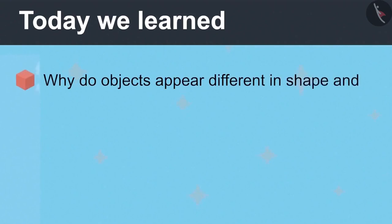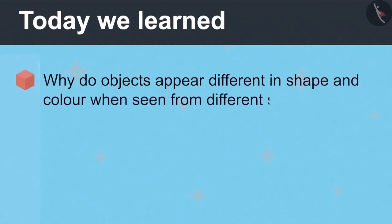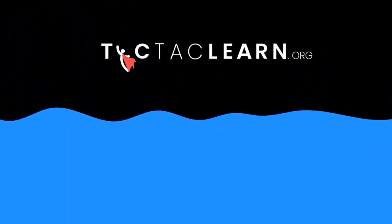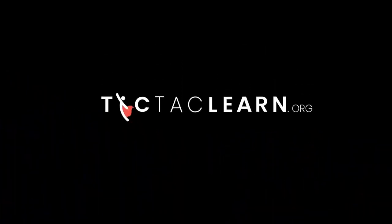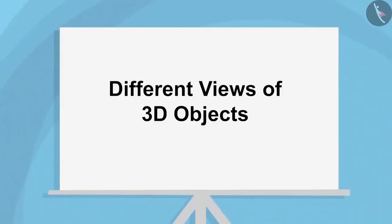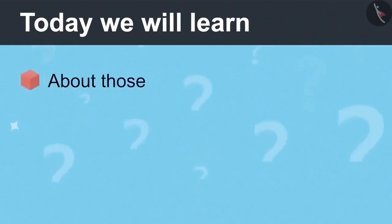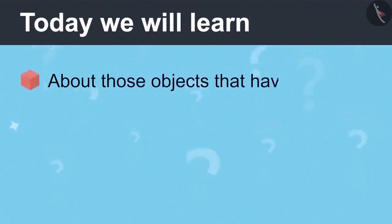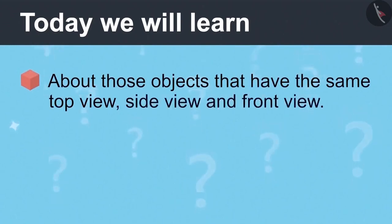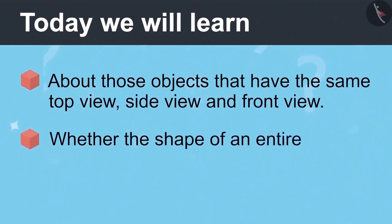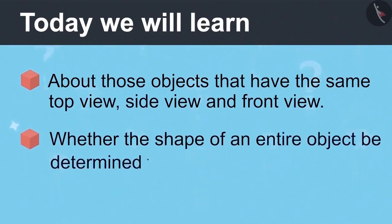Today we learned why objects appear different in shape and color when seen from different sides. Different Views of 3D Objects, Part 3. Today we will learn about those objects that have the same top view, side view and front view, and whether the shape of an entire object can be determined from just three views.